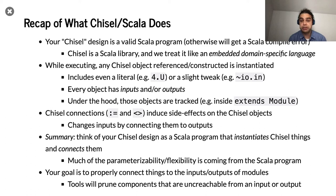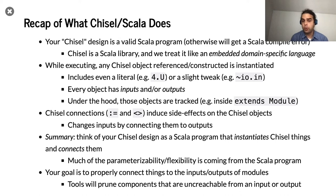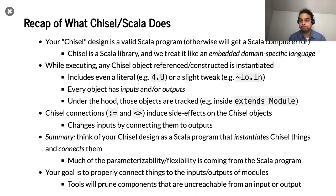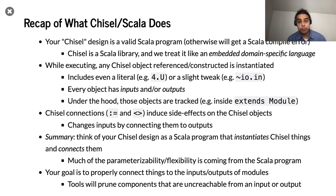During the construction process, any time you reference a Chisel object or Chisel thing, it gets constructed. For example, 4.U, or if you negate io.in, you put a negation operator pointing to io.in as its input — those are now Chisel objects that exist. Each of these objects has fields including the outputs it produces and the input fields.